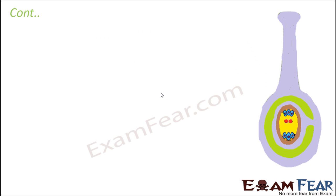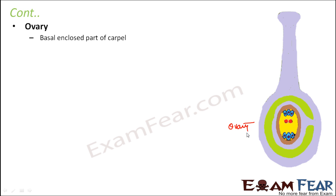Let us see what each of them does, starting with the ovary. The ovary is the swollen portion at the base — it is the basal enclosed part of the carpel. It is completely enclosed. You can think of the carpel like a bottle with a swollen bottom. The ovarian cavity is also called the locule — that is the entire space inside the swollen structure.